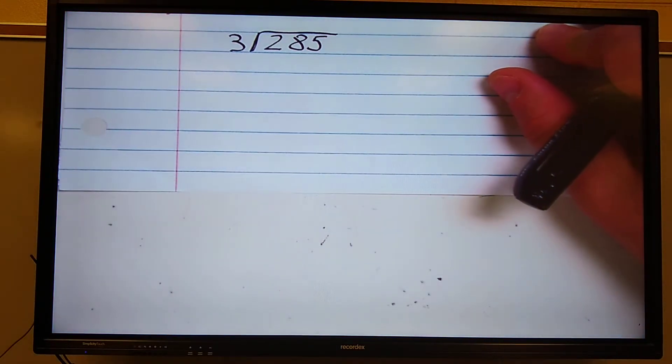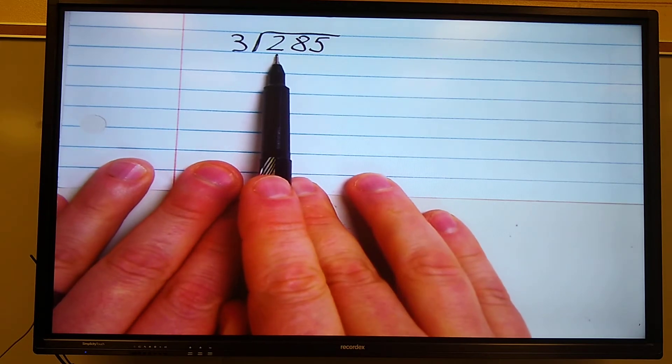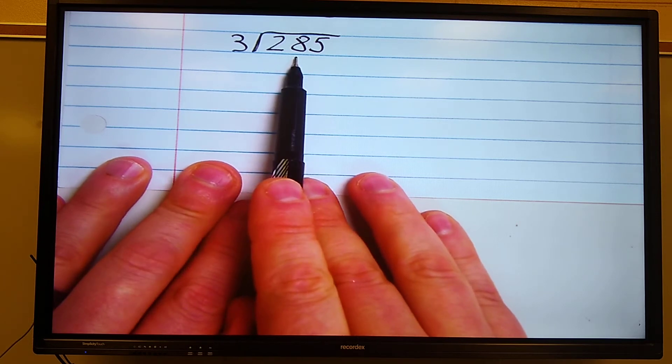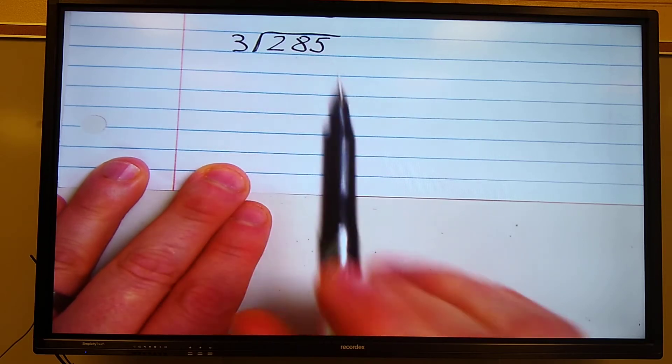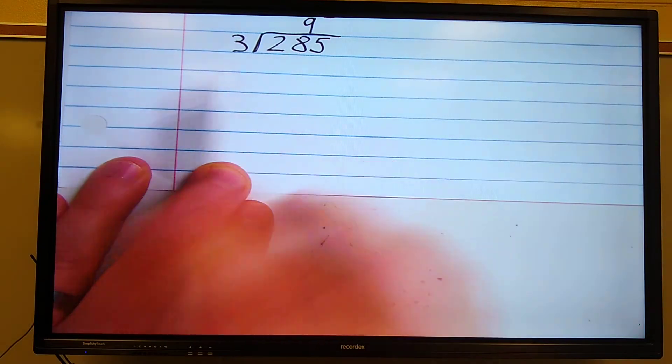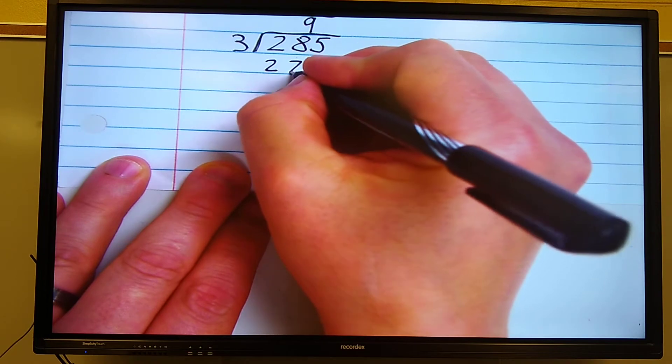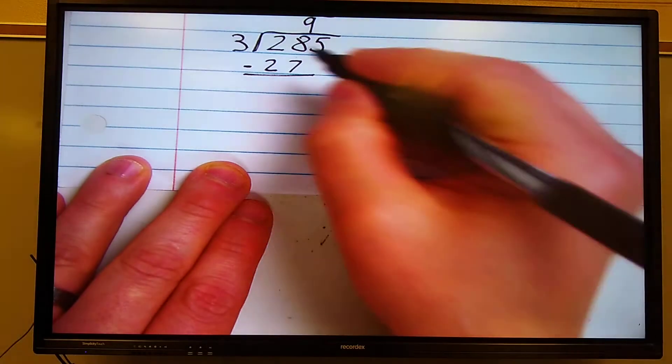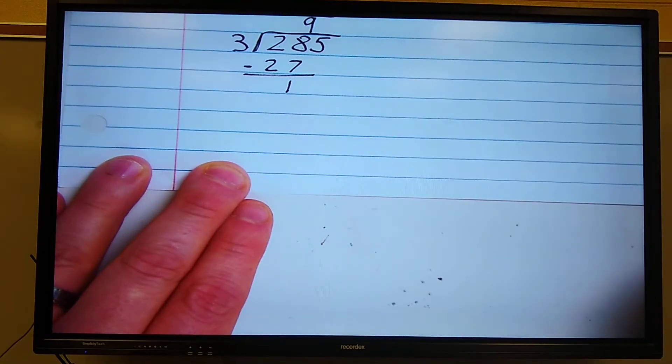Okay, dividing again. Can 3 go into 2? No it can't. So I'll go to the next digit. Can 3 go into 28? Yes it can. How many times without going over? The answer is 9 times. So I put my 9 over the 8, because I divide it into 28. 9 times 3 is 27. That was multiply. My next step is to subtract. 8 minus 7 is 1. 2 minus 2 is 0. I'm not going to put that 0 down.